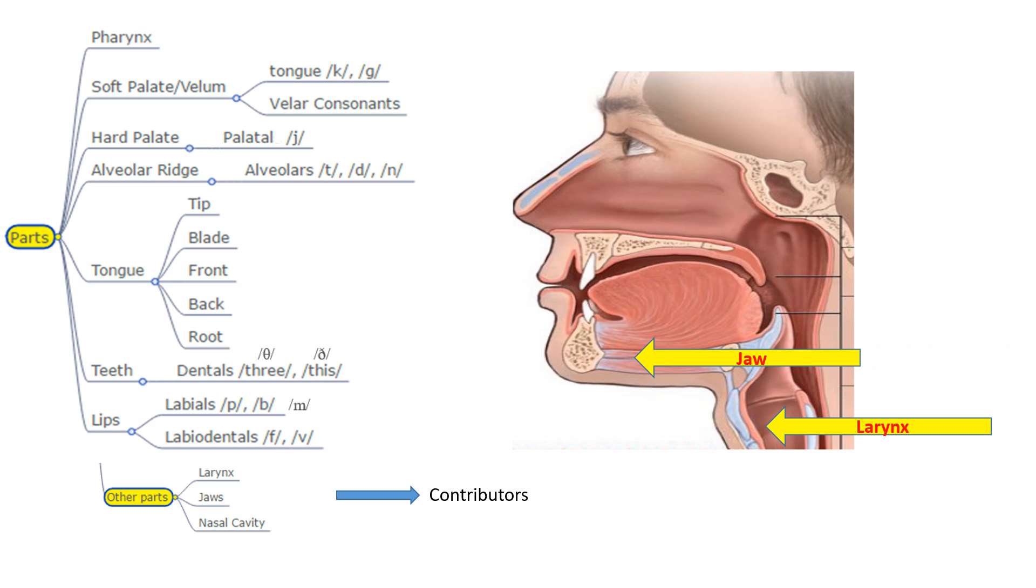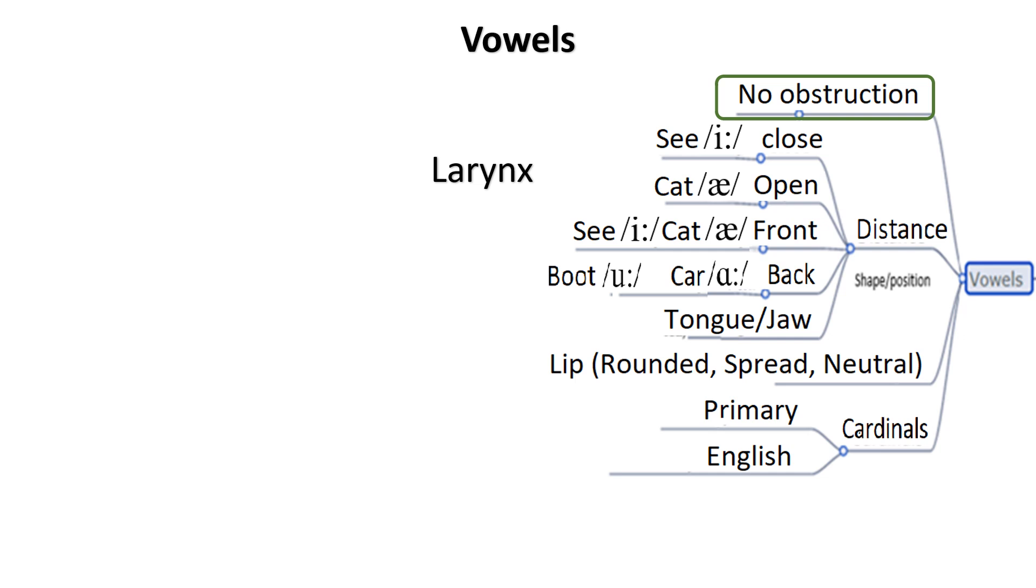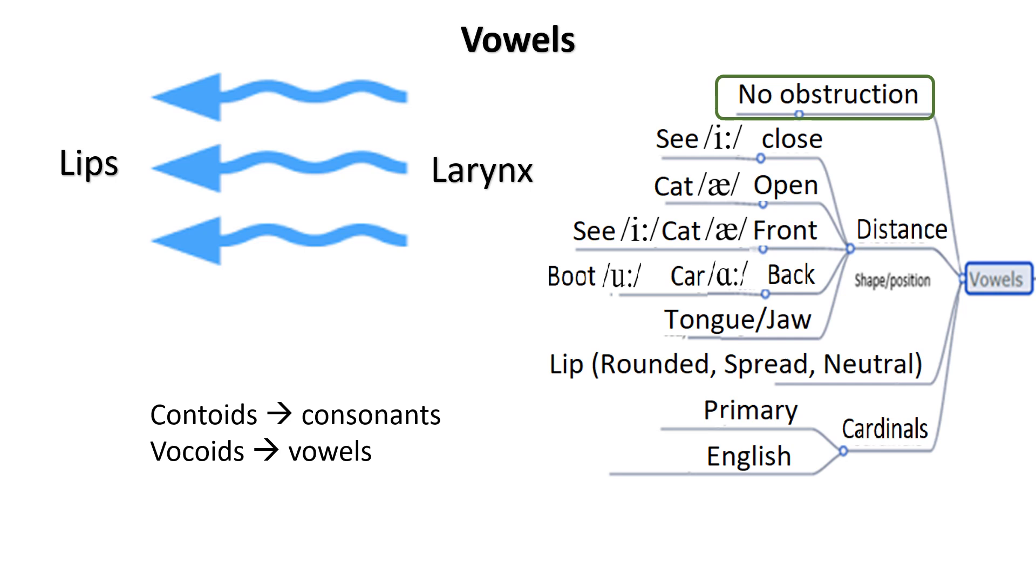There are other contributing articulators. They include the larynx, the jaws, and the nasal cavity. Vowels are produced with no obstruction of the airflow. The air passes from the larynx to the lips with almost no obstruction of the airflow. The term vocoids are used by some scholars to refer to vowels, and contoids to refer to consonants.